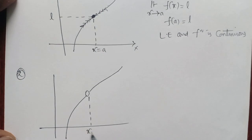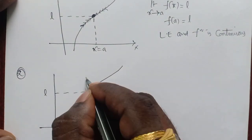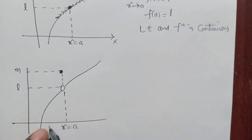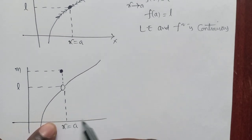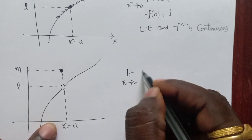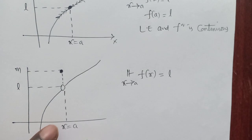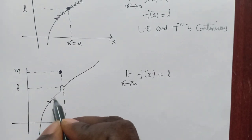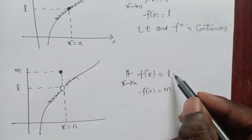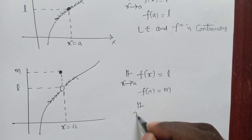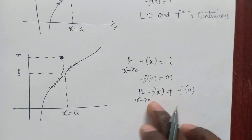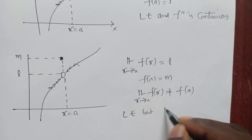In the second case, there is a hole at x equal to a. In case of a hole, the limit always exists. As x approaches a from the left or right side, the graph approaches the same value l, so the limit exists and equals l. But the value of the function is f(a) equals m. Here the limit exists and the function is defined, but they are not equal — limit as x tends to a of f(x) is not equal to f(a). So the function is discontinuous.